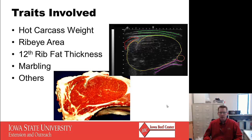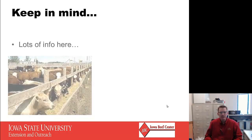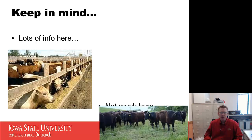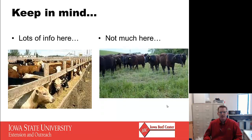It's important to understand that we get carcass trait information from two different sources. We get it from the carcass itself via tag transfer and data collection on the rail, but we can also get it from ultrasound — live animal ultrasound on bulls, heifers, steers, anything to market. We have lots of information contributing to carcass data from the feedlot sector, but very little for grass-fed programs. So these carcass traits need to be used with a bit of caution if you're in a grass-fed or grass-finished type of program, as you might not get the same results using carcass EPDs in that environment that you would in a feedlot setting.